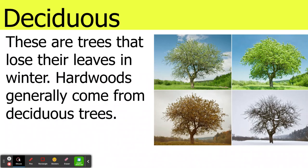Deciduous. These are trees that lose their leaves in the winter. Hardwoods generally come from deciduous trees, whereas softwoods generally come from coniferous trees. So there's deciduous.